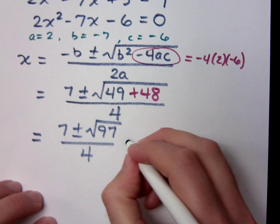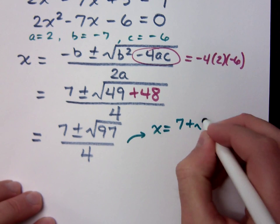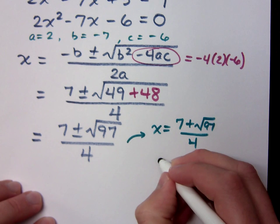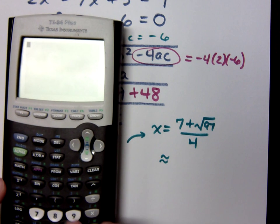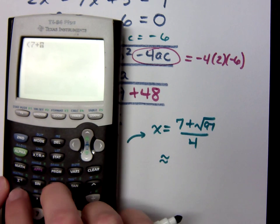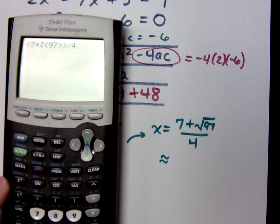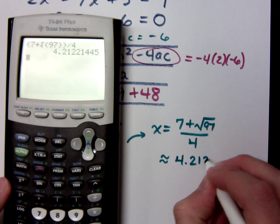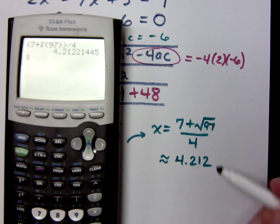What are the answers that I get here? Well, if x equals 7 plus the square root of 97 over 4, what does that guy equal? About 4.212. Does that satisfy the requirements that I have for my restrictions of x that had to be greater than 3? This guy should work out, then.